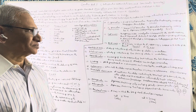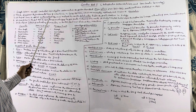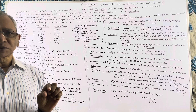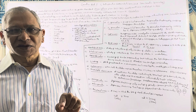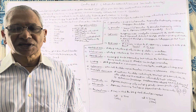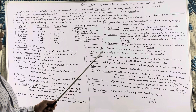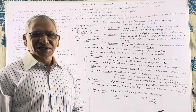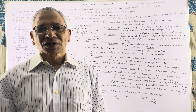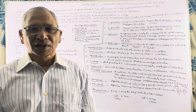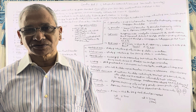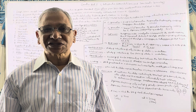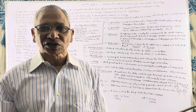Mendel also used a large sample size. If the sample size is small, errors will be more; if the sample size is large, errors are minimized. Because he used a large sample size, he arrived at correct conclusions. He was also very lucky because he selected the garden pea plant, Pisum sativum, which has seven pairs of chromosomes, and he selected seven pairs of characters for his experiments. Fortunately, the genes for these seven traits are either present on different chromosomes, or when present on the same chromosome, they are not closely linked.